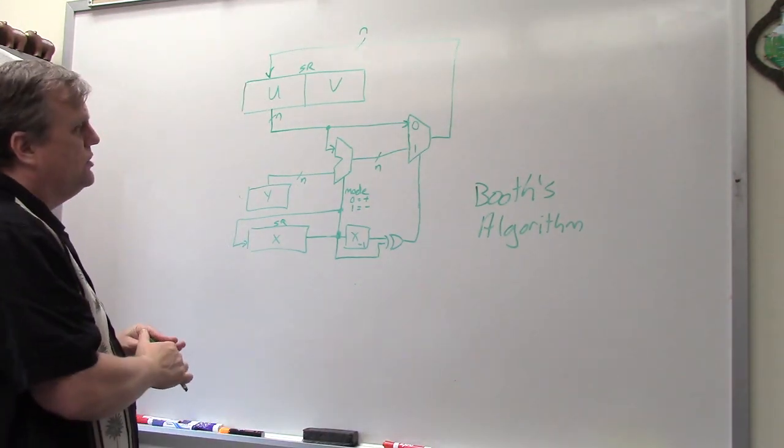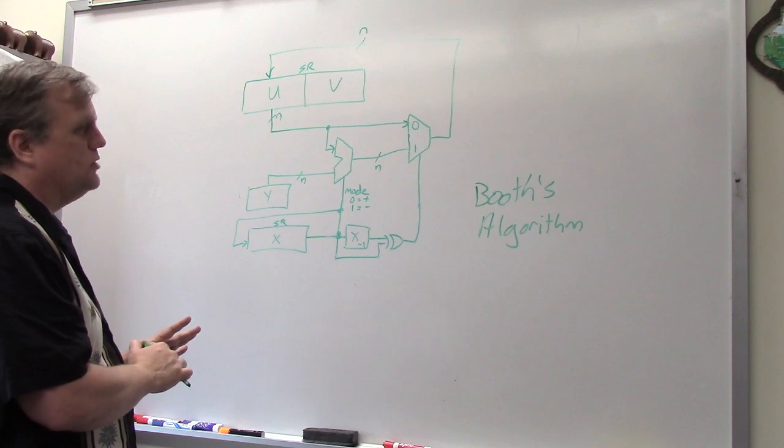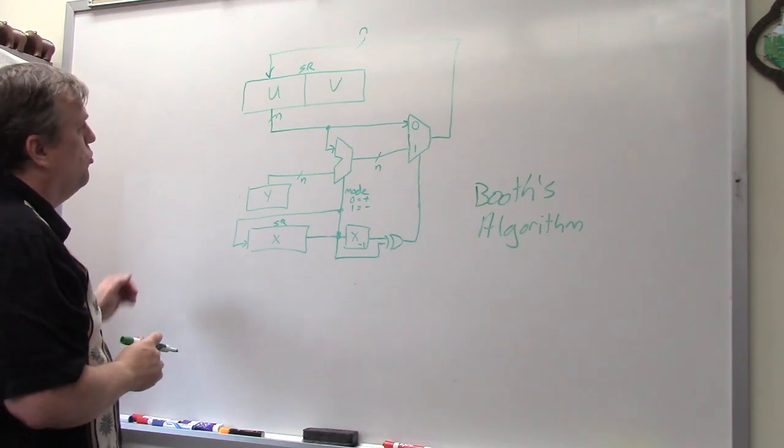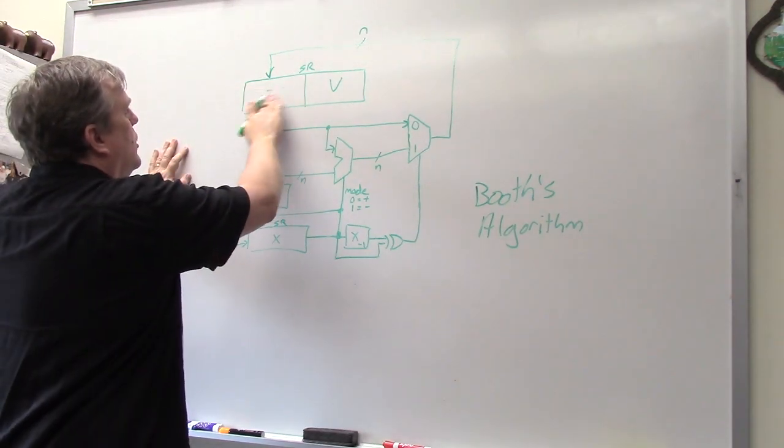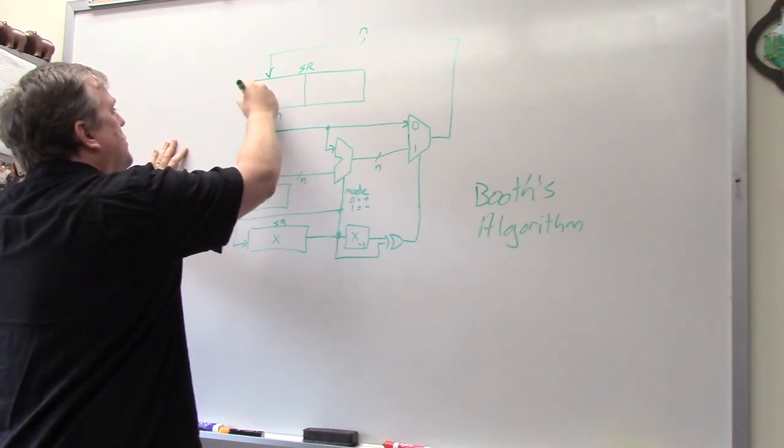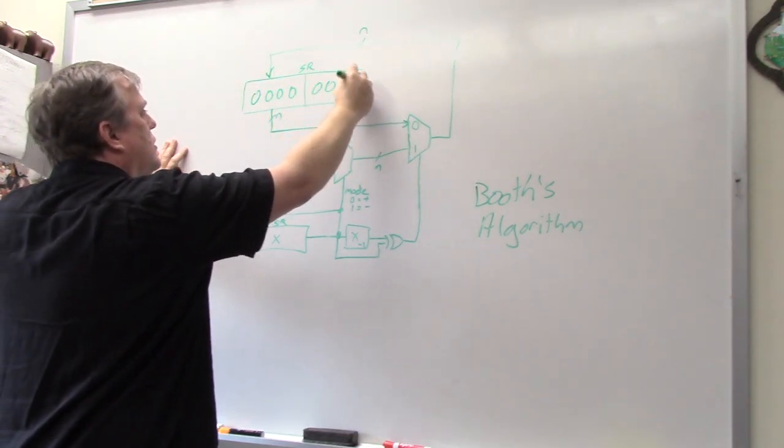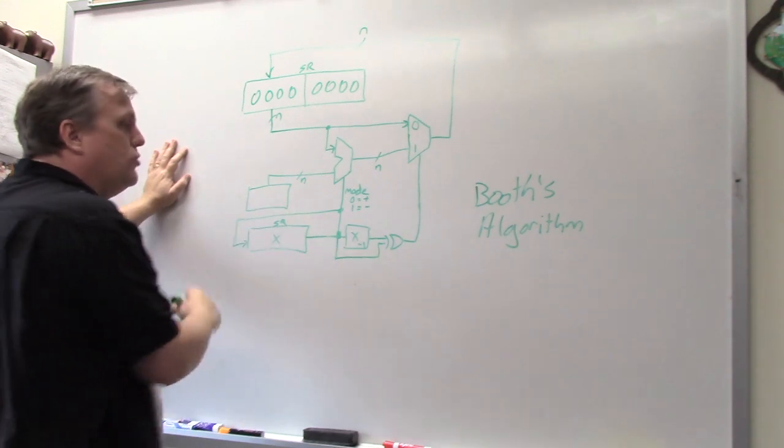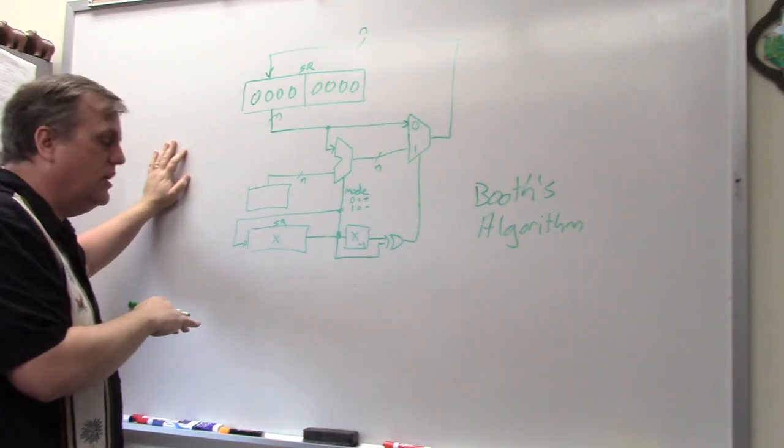So this setup that's going in will do each of the individual steps. Now, what might be helpful is to just run through an example. So typically u, v starts out as zeros.